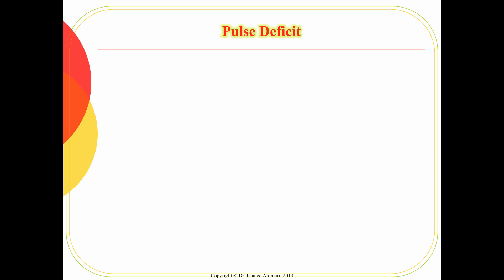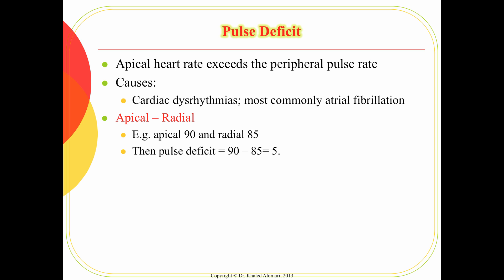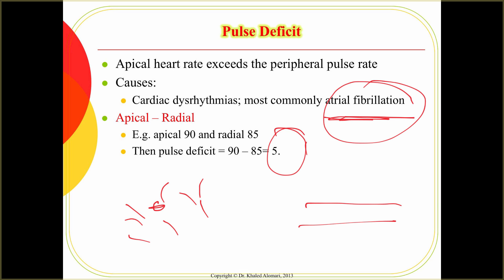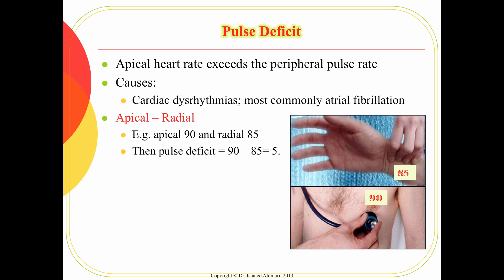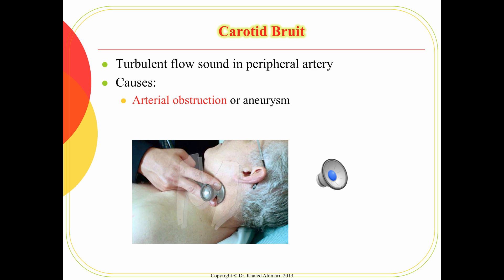The last technique is auscultation. After assessing the apical pulse, you might find a difference between the apical pulse and the radial pulse — this is called pulse deficit. Normally there should be no difference, but if the apical pulse is 90 and radial pulse is 85, the pulse deficit is five. You commonly see this with irregular heart rates and atrial fibrillation, because in atrial fibrillation multiple areas beat simultaneously but only the beats creating a QRS and contraction will be felt as a radial pulse.